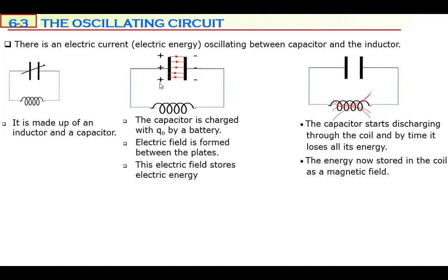The capacitor is charged by a battery. When you attach the positive terminal to one plate and the negative terminal to the other plate, one plate becomes positive and the other becomes negative. An electric field forms from positive to negative plate — energy is stored in the capacitor in the form of an electric field. In a capacitor, energy is stored in the form of an electric field.